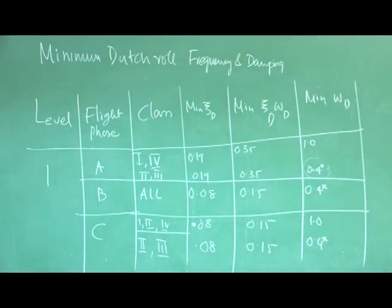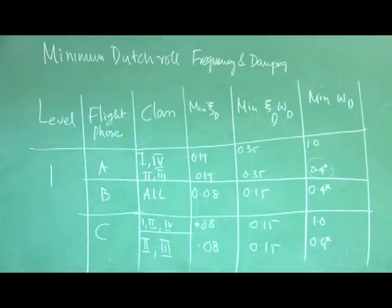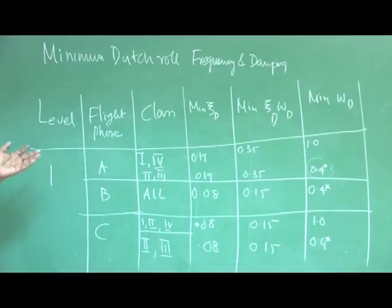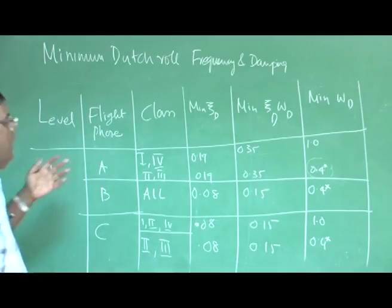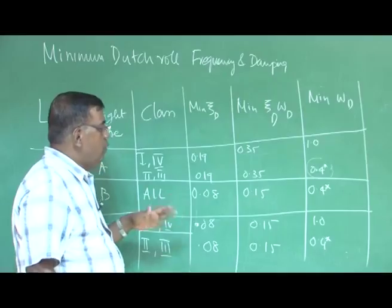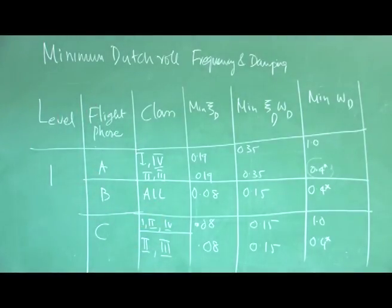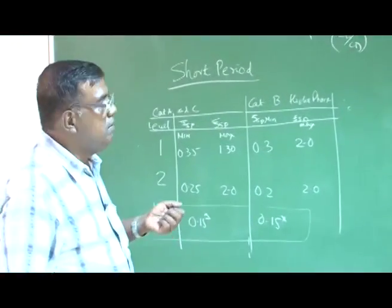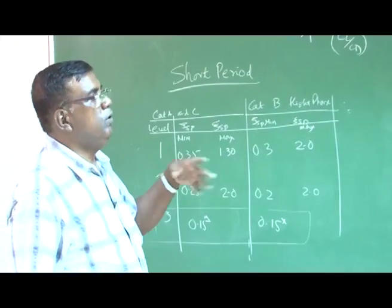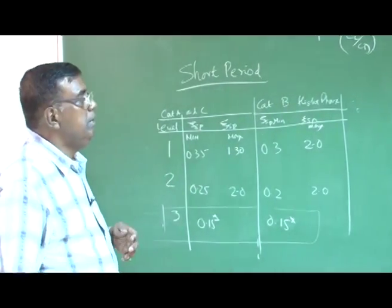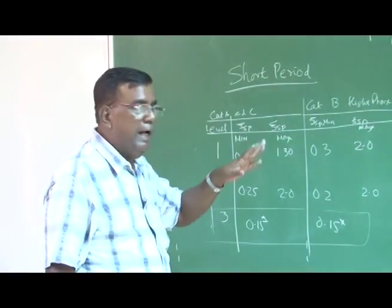Similarly you will find values for level 2 and level 3. What I want to communicate is: when talking about handling qualities — for phugoid, spiral, or dutch roll — these are primarily decided by the damping ratio and natural frequency or their combinations. Those interested in exact numbers should read the latest airworthiness requirements; these numbers change depending on technology and the control system available.